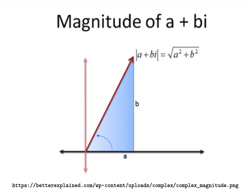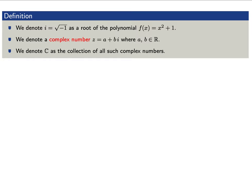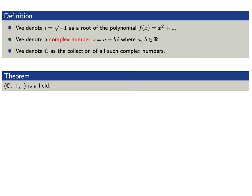Now let's formally state the properties of complex numbers. We let i denote the square root of minus 1 — it's the root of the polynomial x squared plus 1. A complex number z has the form a plus bi, where a and b are real numbers, and we denote the collection of such complex numbers as C. The first big theorem is that the complex numbers under addition and multiplication form a field.